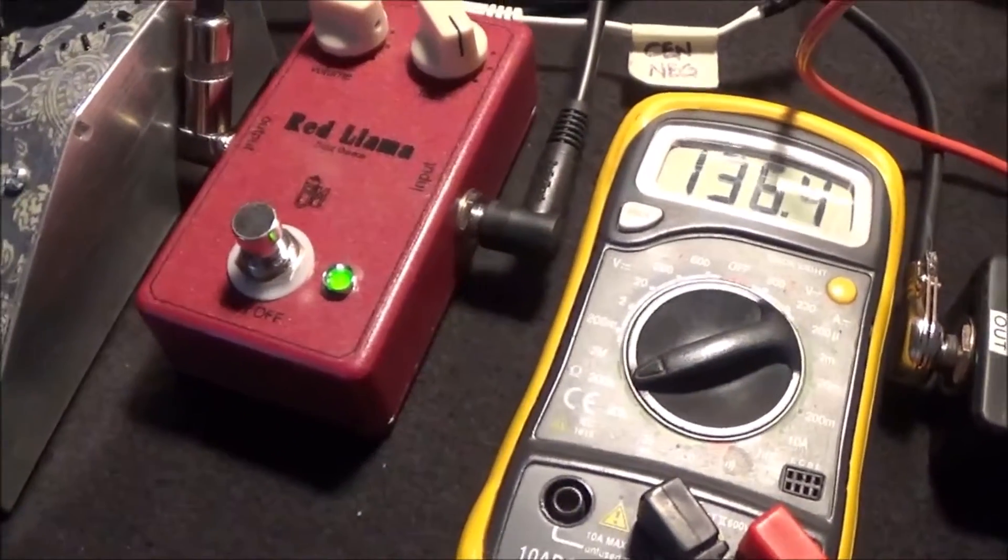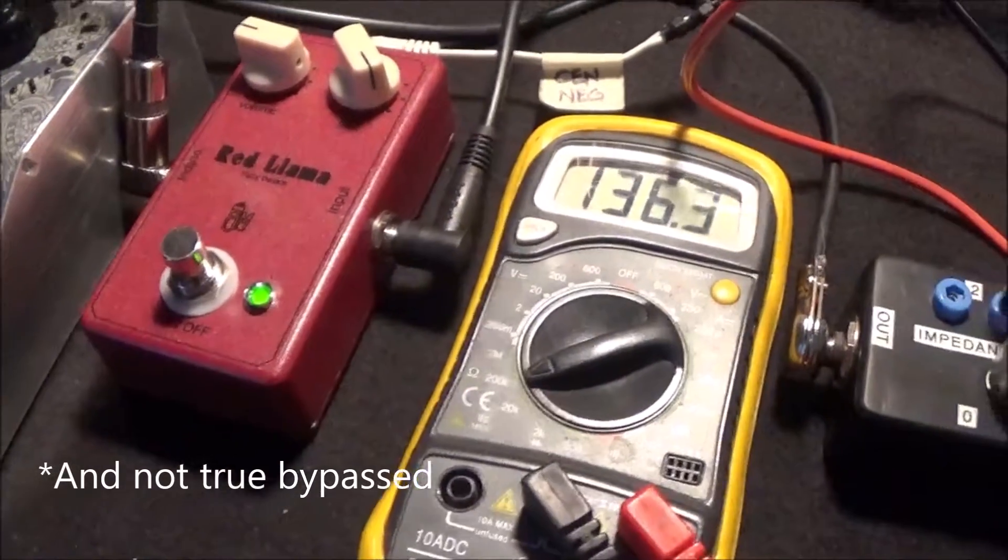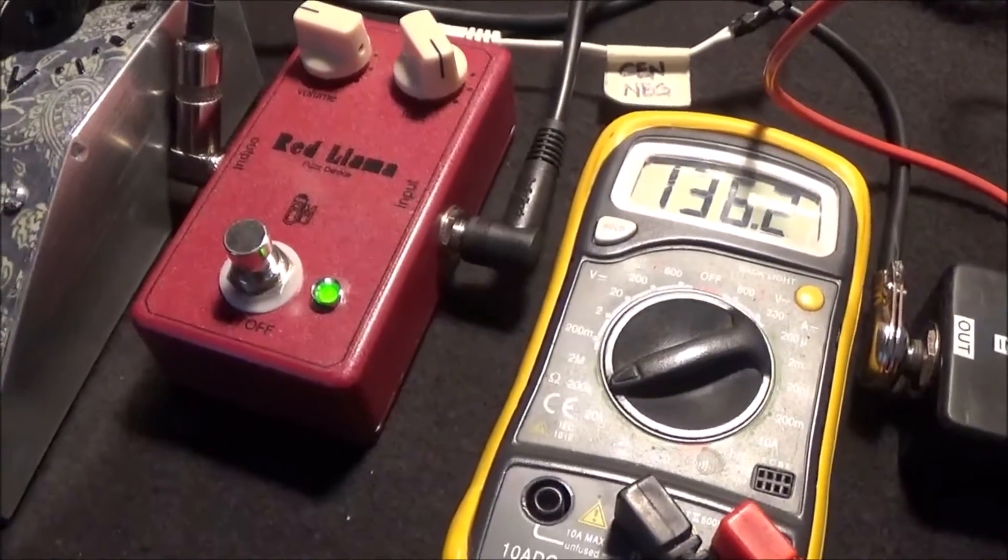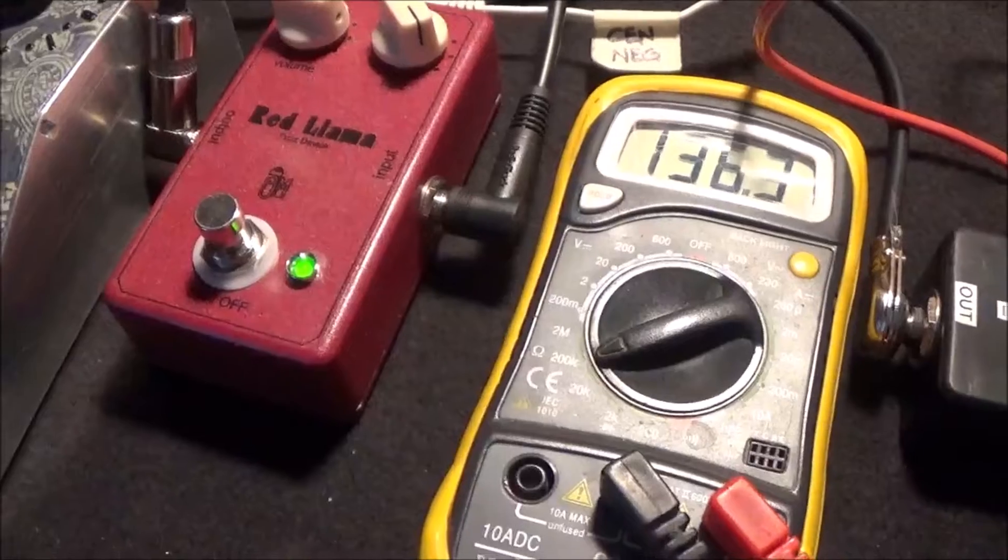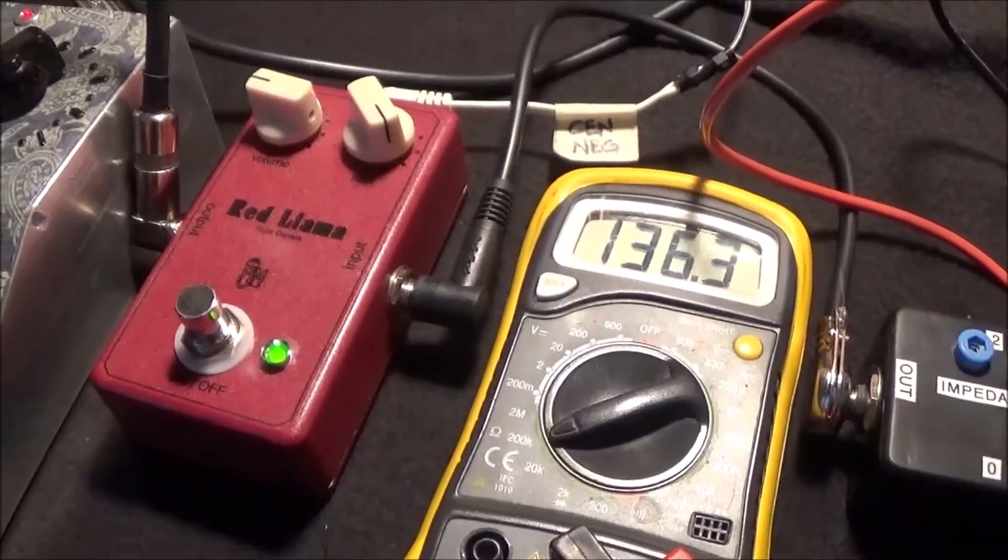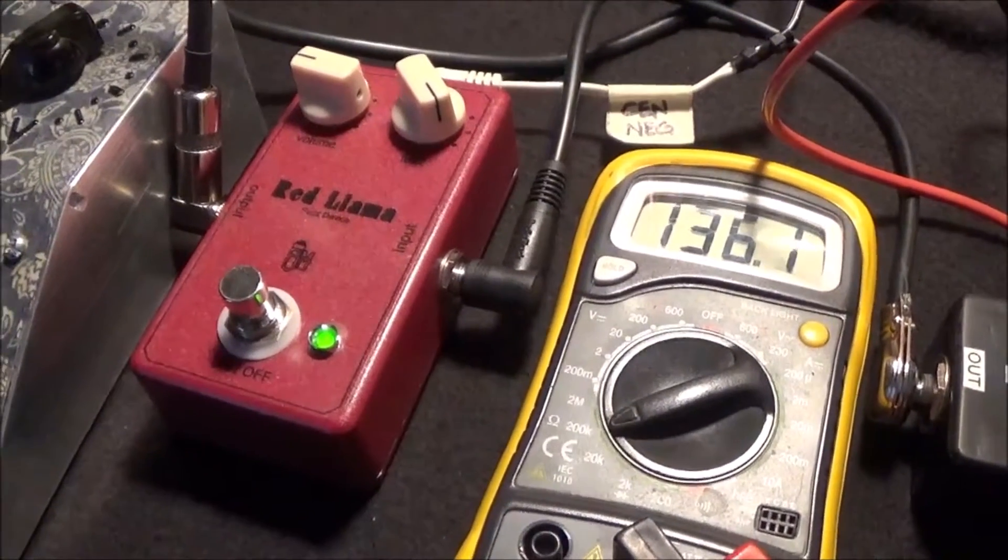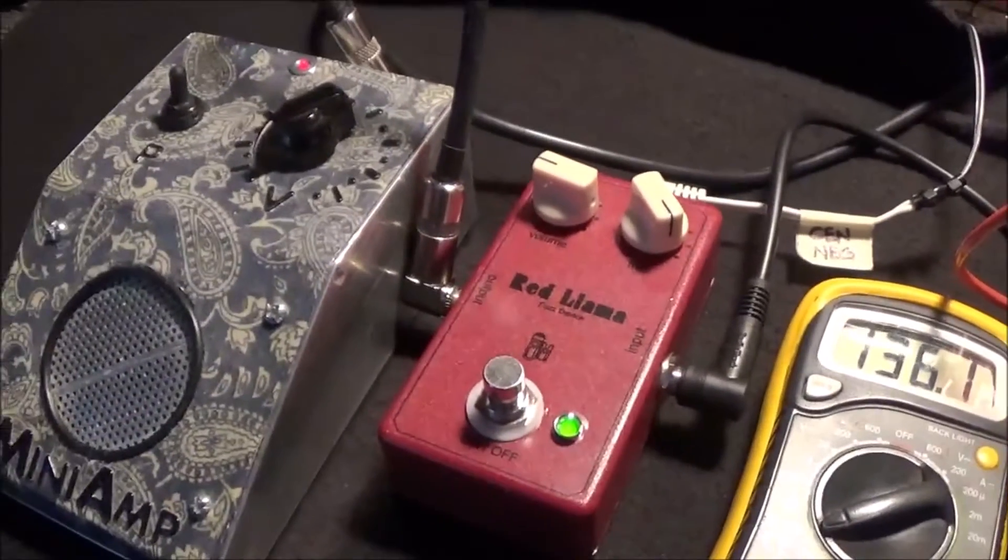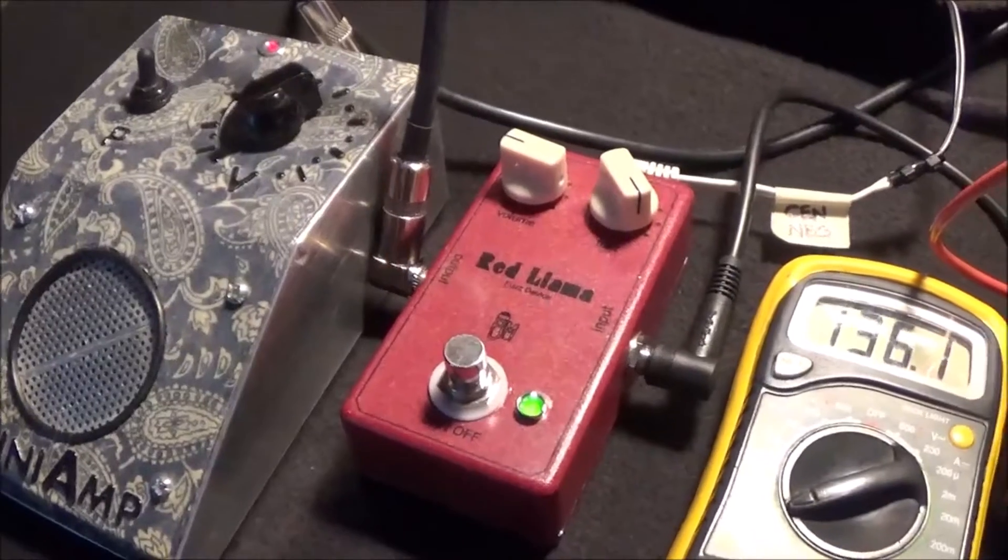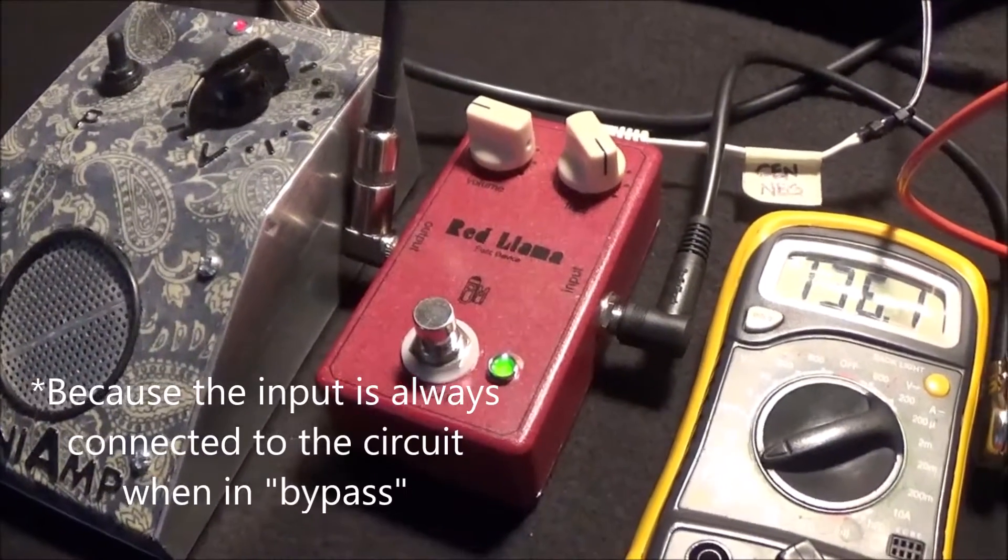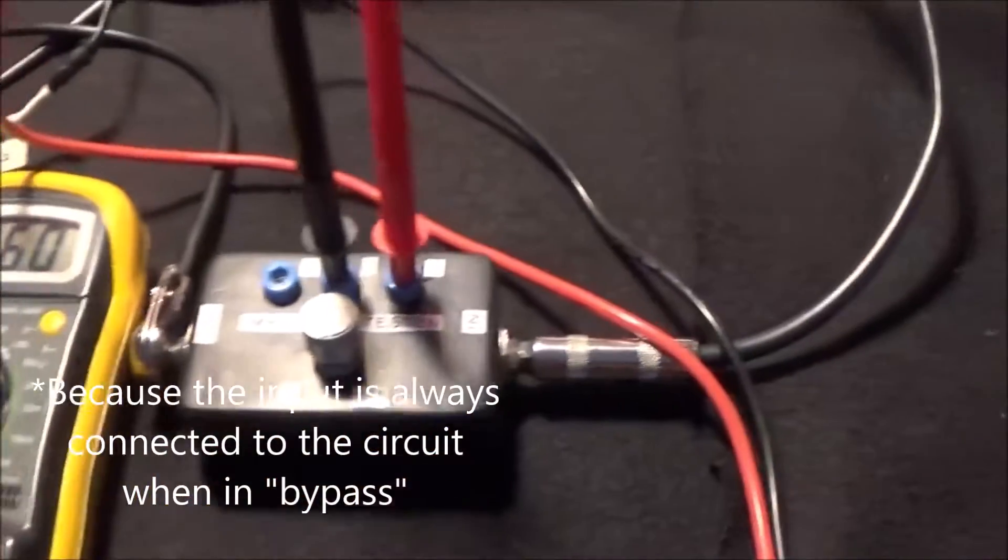If you have, say, a wah pedal that's a real tone sucker and you want to see just how bad it is and why you should true bypass it, measure the input impedance. It's probably way less than 100K and that's good justification to put an input buffer into a pedal like that.